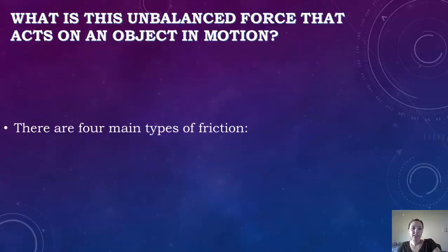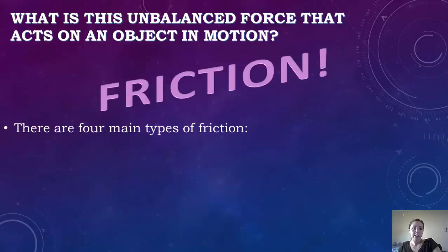So what is this unbalanced force that acts on an object in motion? That can be named friction. There are four main types of friction. You have sliding friction, which, for an example in ice skating, when your skates are sliding across the ice, that causes a type of friction.